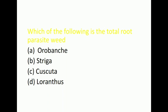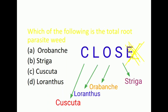Next question: Which of the following is the total root parasite weed? Options are Orobanche, Striga, Cuscuta, Loranthus. Correct answer is Orobanche. We already discussed about Striga. Cuscuta is a total stem parasite and Loranthus is semi-stem parasite. We can remember with the trick: C for Cuscuta, that is total stem parasite; L for Loranthus, semi-stem parasite; O for Orobanche, total root parasite; S for Striga, semi-root parasite.